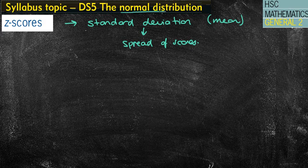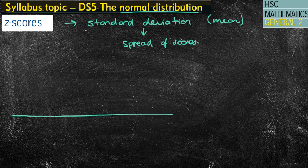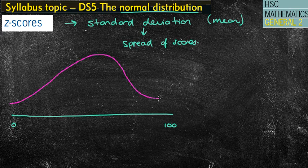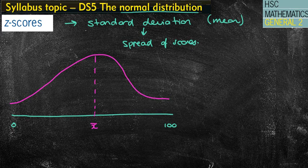So first of all, what does normal distribution mean? Think about the HSC. The HSC is generally between about 0 and 100. What the HSC generally tries to do — and remember this is all in theory — they want to rank the marks in a normal distribution so that a small amount of people get a mark of 0, a very small amount get 100, and the average mark is around about 50. Generally, they will scale the marks so that it fits this normal distribution curve.